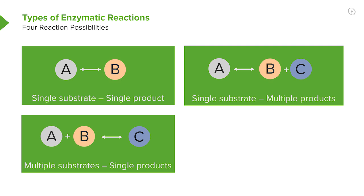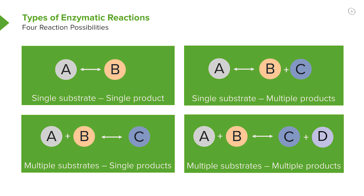I could take multiple substrates and make single products, which is the opposite, which would mean I would be putting two things together to make a third. That third being C as shown here. And last, I could have multiple substrates and multiple products in which A and B are converted into two different things, C and D.